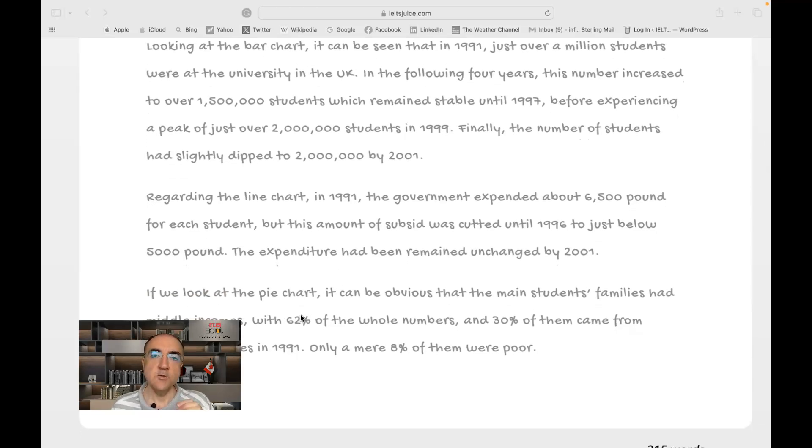Regarding the line chart, in 1991, the government expended about 6,500 pounds. 6,500 is definitely more than one, and pound, the word pound, like the word dollar and euro, they are countable. Money is uncountable, but dollar, pound, and euro can be one dollar or two dollars, one pound, two pounds. So here, 6,500 pounds for each student. But this amount of subsidy, there's a missing y here.